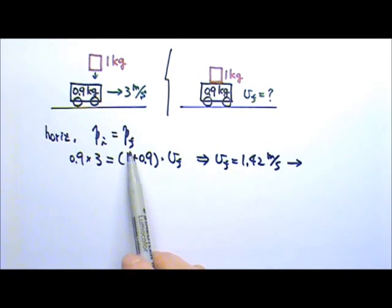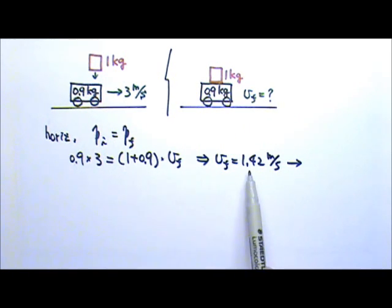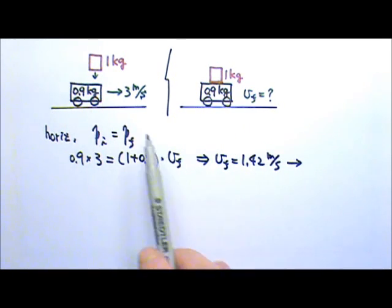Because the momentum is conserved, so afterwards there's more mass moving, therefore the velocity is less than before.